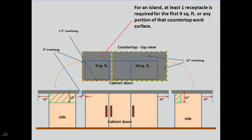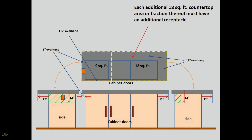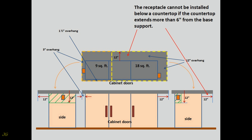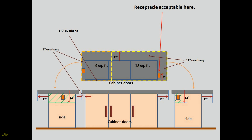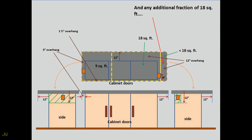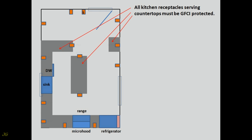For an island, at least one receptacle is required for the first 9 square feet or any portion of that countertop work surface. The receptacle cannot be installed lower than 12 inches below the countertop surface, and cannot be installed below a countertop if the countertop extends more than 6 inches from the base support. Each additional 18 square feet — or any fraction thereof — requires an additional receptacle. All kitchen receptacles serving countertops must be GFCI protected.